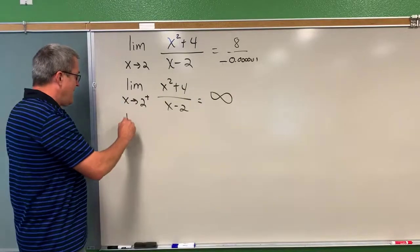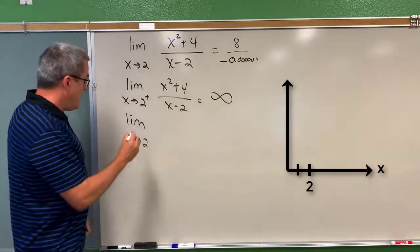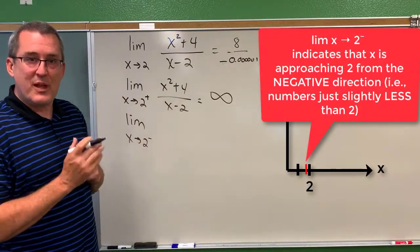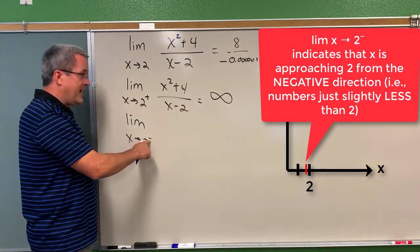Or, on the other hand, if we allow those input quantities to approach 2 from the slightly less than 2, slightly to the left of 2, like 1.99999, a little negative sign up there indicates that idea.